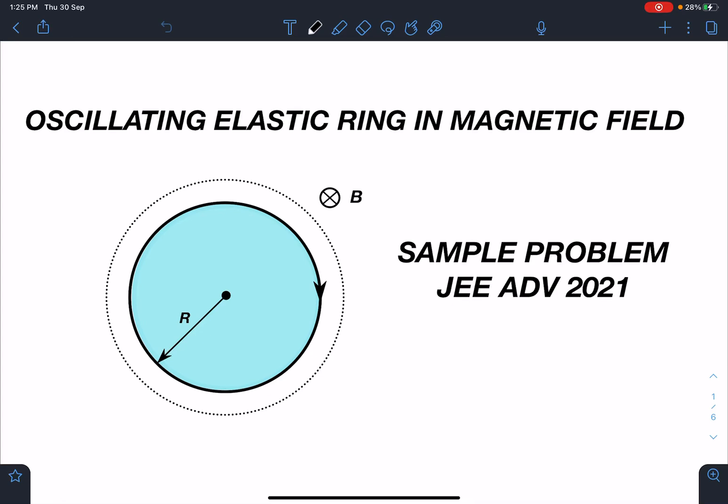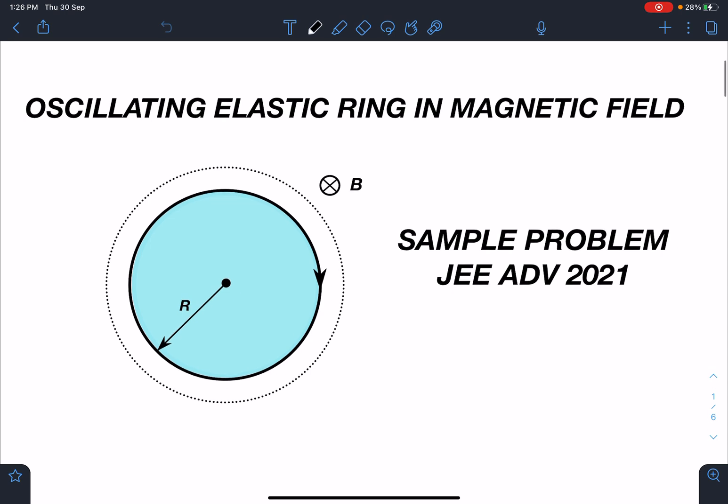Welcome to my channel Indian School of Physics. This is Natin here and today I've come with another sample problem for JEE Advanced 2021. It is oscillating elastic ring in magnetic field. It's just speculation, I'm not leaking the paper. I have no idea what kind of paper will come. It's just a guesswork.